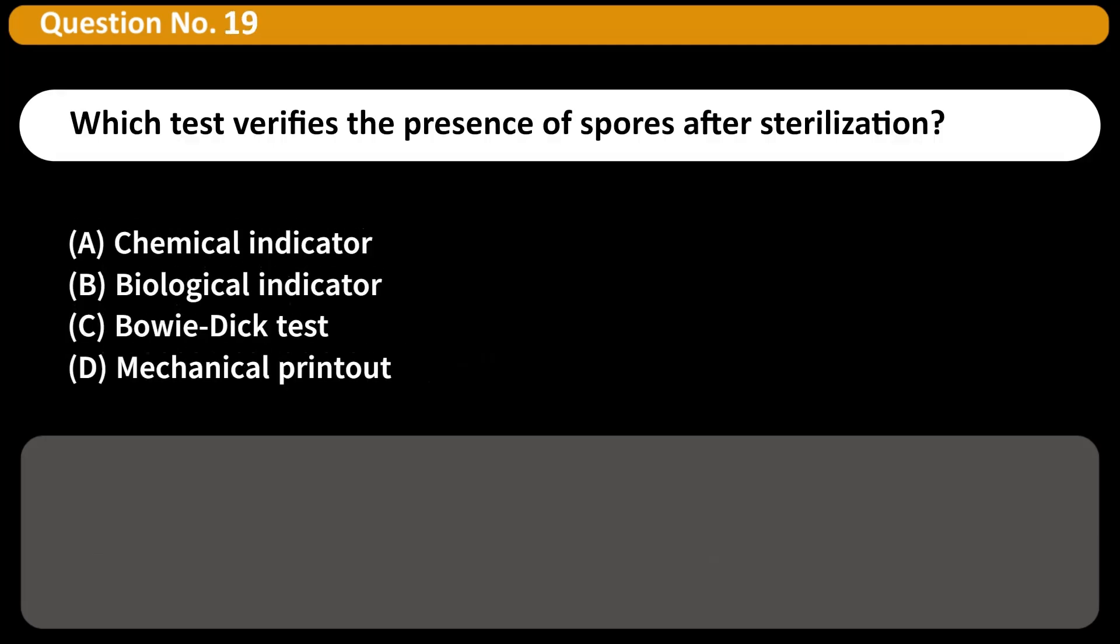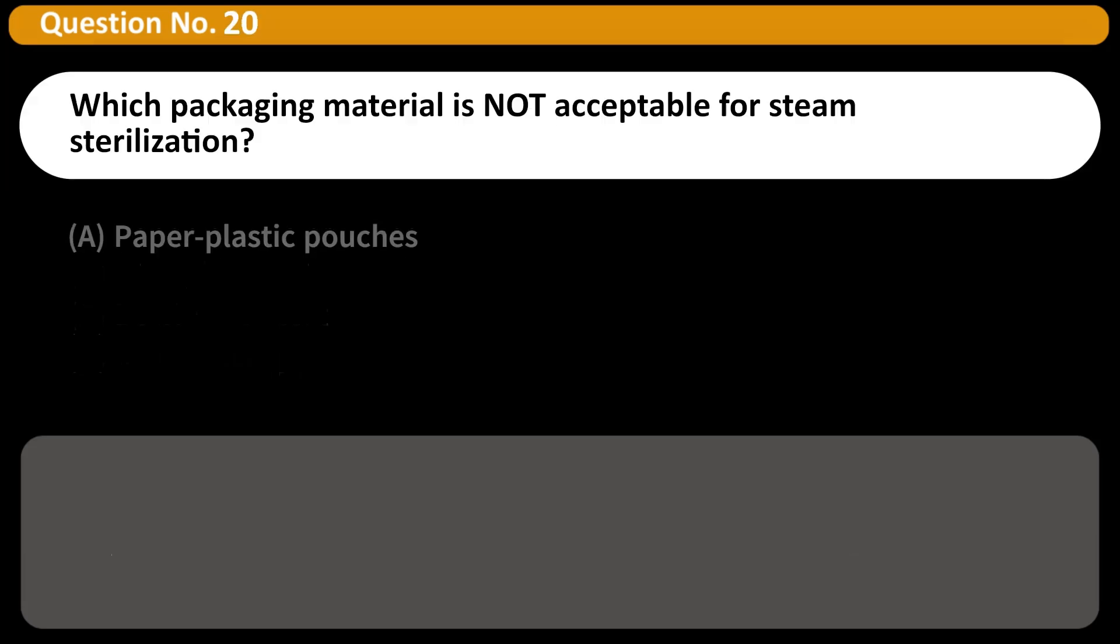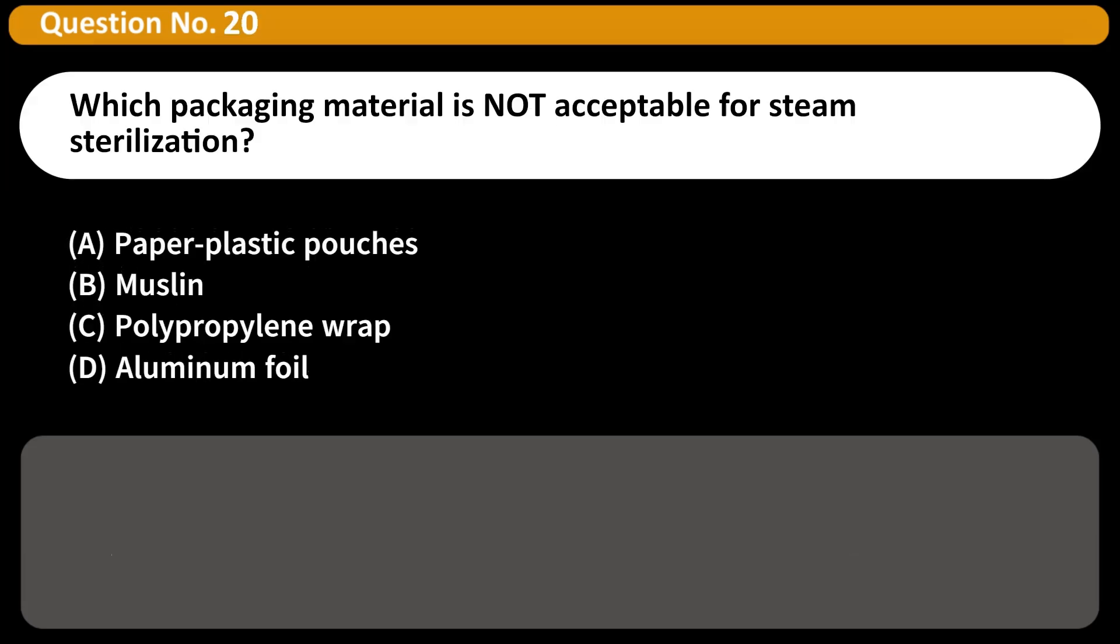Which test verifies the presence of spores after sterilization? A. Chemical indicator, B. Biological indicator, C. Bowie-Dick test, D. Mechanical printout. Answer B. Biological indicators use live spores to confirm sterilization effectiveness.